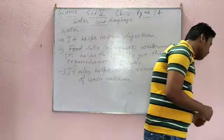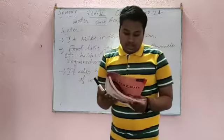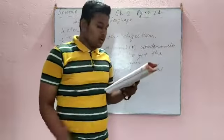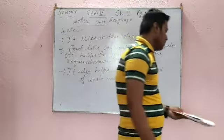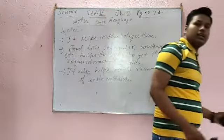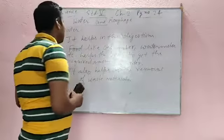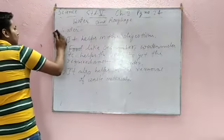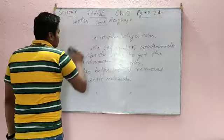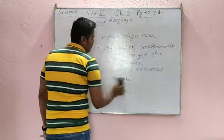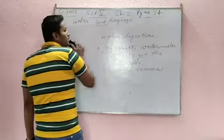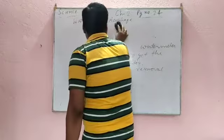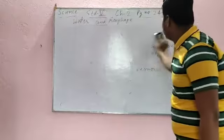Now next is roughage. Roughage is the indigestible part of a plant food, called roughage. The indigestible part. The food which cannot be digested easily. Their nature is that it is indigestible.